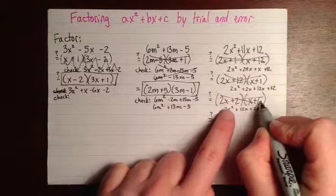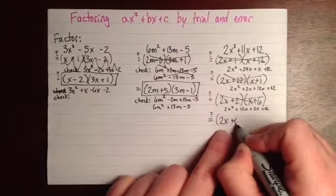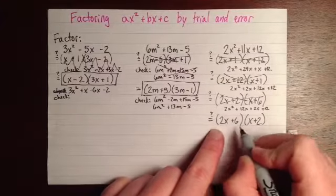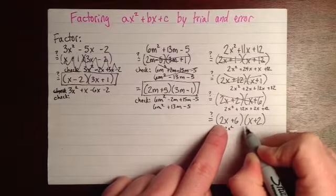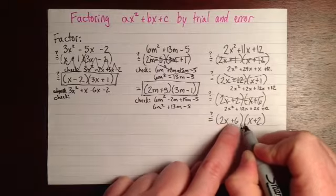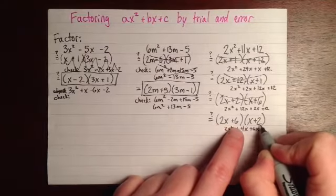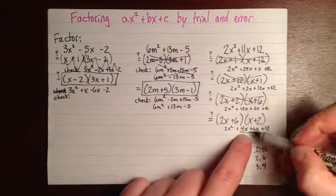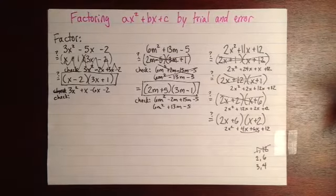So we've got 2x, and I'm just switching these orders, plus 6, and then x plus 2. We'll see what that gives us. 2x squared plus 4x plus 6x plus 12. Oh, that feels really close, because that's 10x, but we want 11.